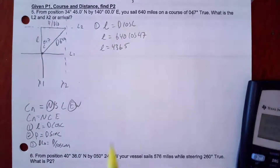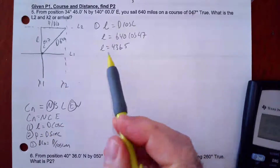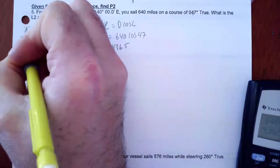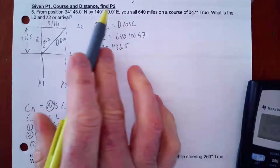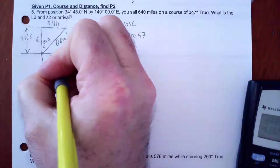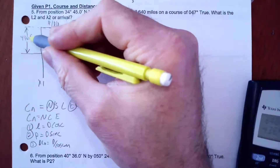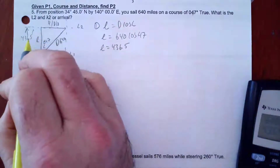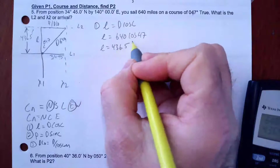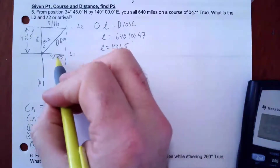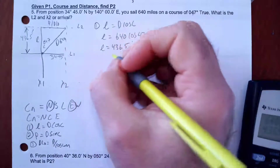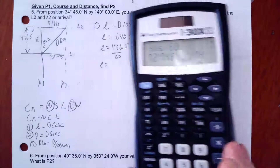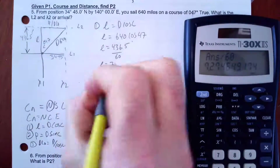l equals 436.5 — that's in minutes of arc. Now I know L1 is 34°45'. I want L2, so I'm going to apply this 436.5 minutes to L1. This is in degrees-minutes; this is in minutes only. I'll convert from minutes to degrees-minutes by dividing by 60: 436.5 ÷ 60 gives 7.27, so that's 7 degrees.